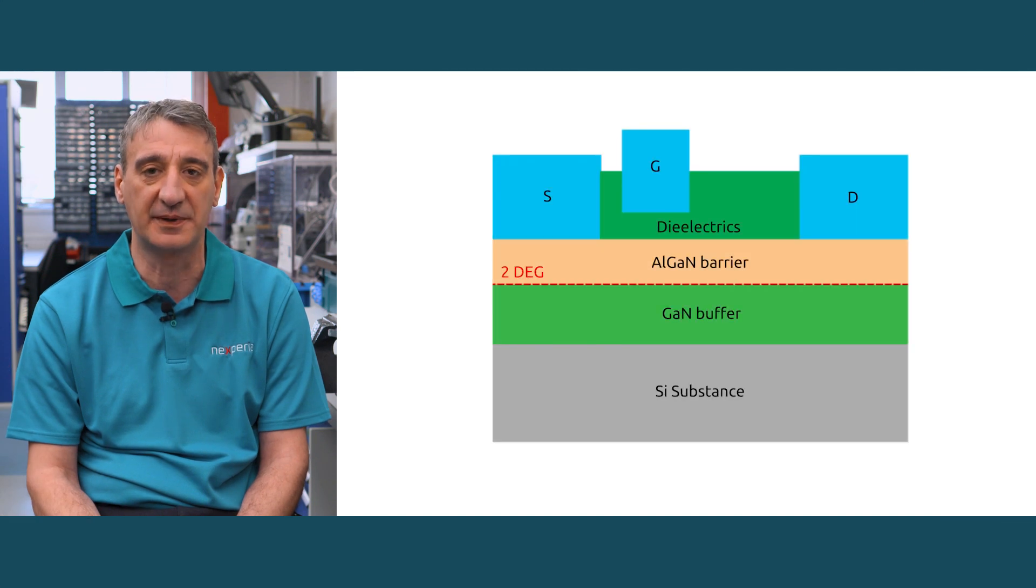In cascode, the device GaN HEMT is always on. The normally-off behavior is realized by using a 30-volt silicon MOSFET in series with a 650-volt GaN HEMT, where the drain of the low-voltage MOSFET sits on the gate pad of the HEMT.